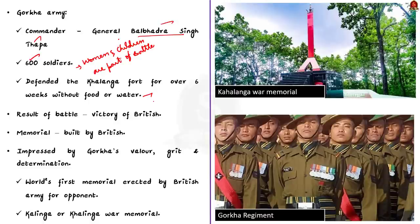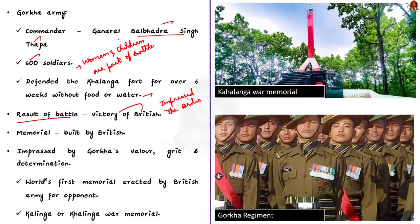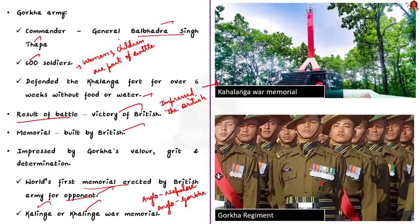This bravery is what is celebrated in the Mela, helping the current young generation learn about Gorkha history and culture. After the six-week-long battle, the Gorkhas lost, which surprised the British — with their mighty regiment, they had expected to end the battle in just a couple of days. The valor, grit, and determination of the Gorkhas impressed the British so much that they themselves built the Kalanga War Memorial to acknowledge the bravery. It is considered the world's first memorial erected by a British army for their opponent. The battle is also known as the Anglo-Nepali War, Anglo-Gorkha War, or simply the Gorkha War. After seeing the bravery of Gorkhas, the British even raised the Gorkha regiments, which are still part of the Indian army today.